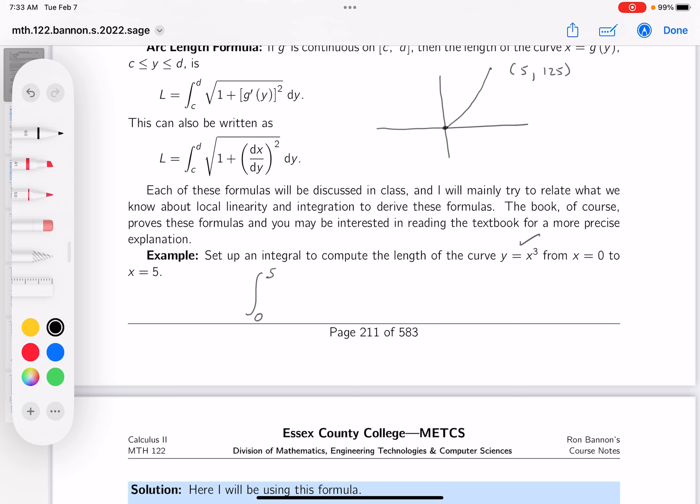And then we have to write the root down. That's going to be the root of 1 plus, well I've got to do something now. I've got to get the dy dx. And that's going to be what? 3x squared, right?